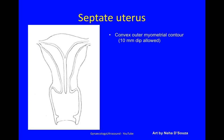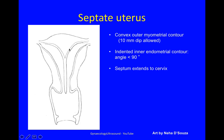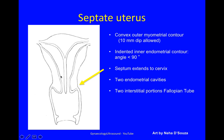In a septate uterus, again a convex outer myometrial contour. An indented inner endometrial contour with an angle of less than 90 degrees. The septum now extends to the cervix, and there are two endometrial cavities and two interstitial portions of the fallopian tube.